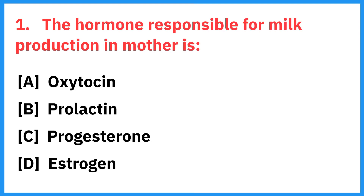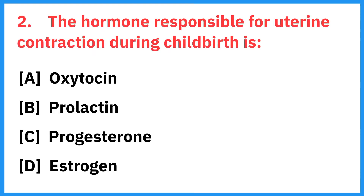The hormone responsible for milk production in mothers is? Correct answer is prolactin. The hormone responsible for uterine contraction during childbirth is? Correct answer is oxytocin.